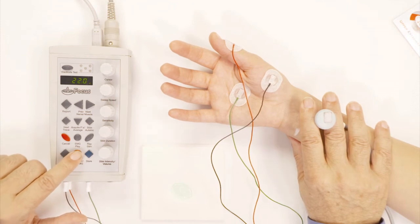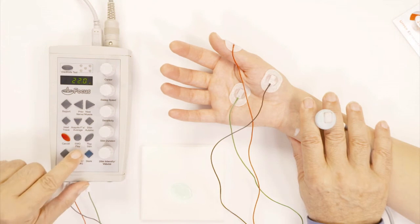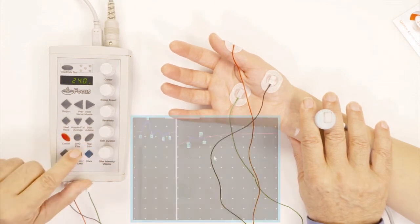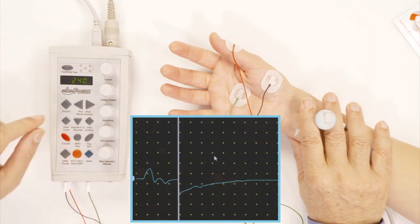Now, sometimes if you don't get a good response, you ask the subject to make a fist with the other hand. So, make a fist with your other hand, and sometimes that enhances the F-wave. So, here we go. And we got a nice F-wave here.